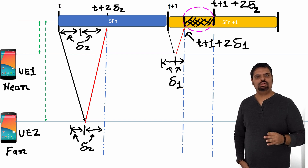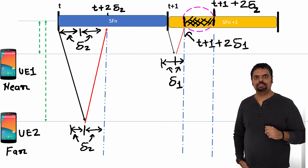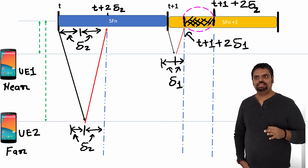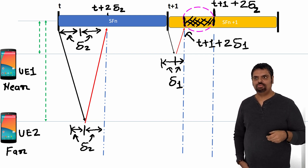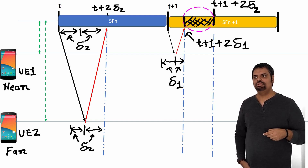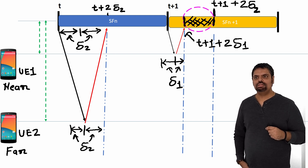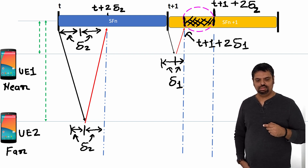Timing advance is required for uplink synchronization. At the eNB side, uplink and downlink should be synchronized. What do we mean by that, why do we do timing advance, and how do we do it — we will see in the next slides.